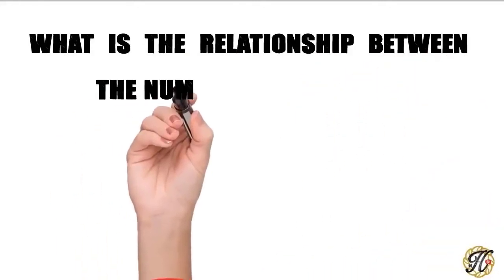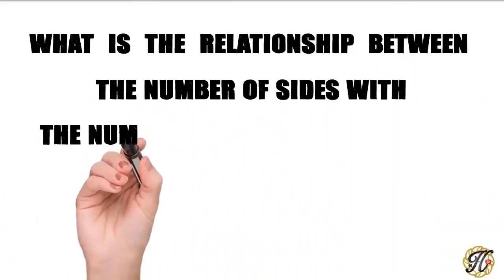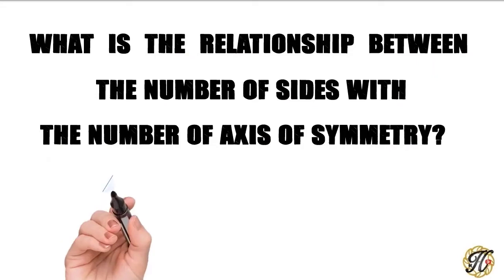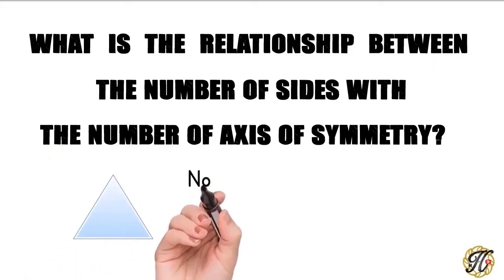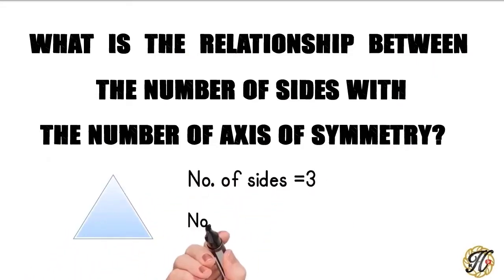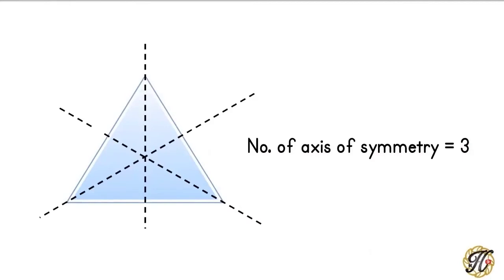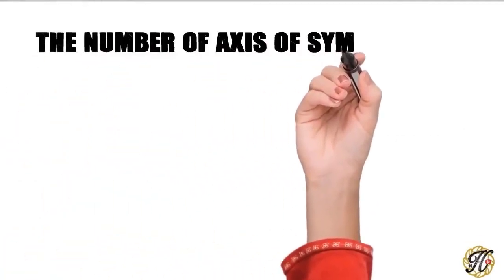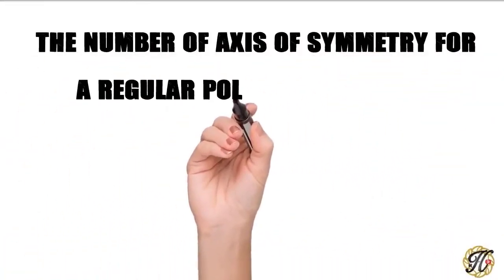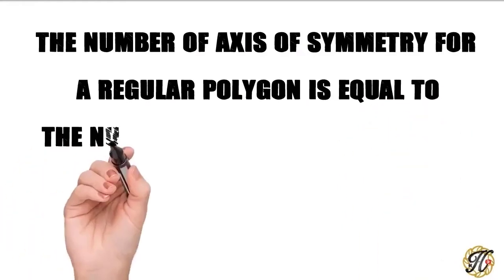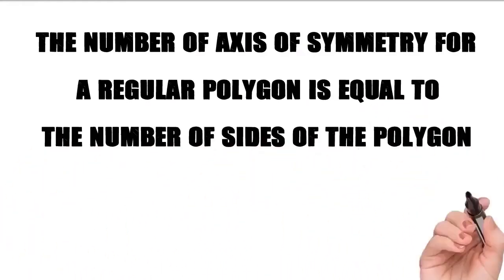What is the relationship between the number of sides and the number of axis of symmetry? The number of sides of an equilateral triangle is 3. What is the number of axis of symmetry? The axis of symmetry of an equilateral triangle is 3. The number of axis of symmetry for a regular polygon is equal to the number of sides of the polygon.